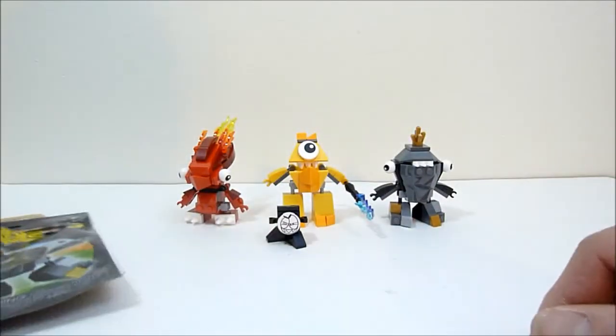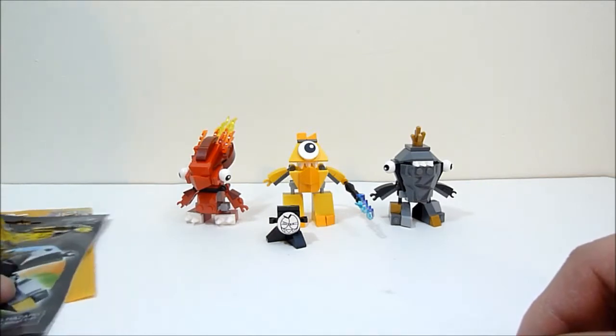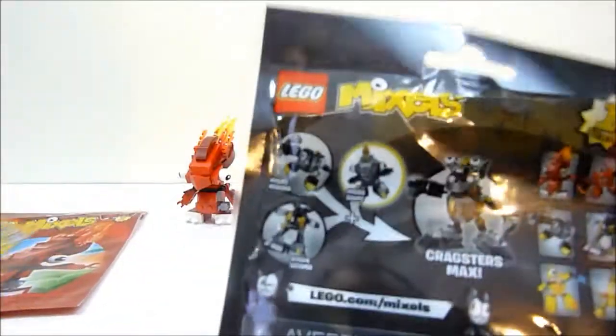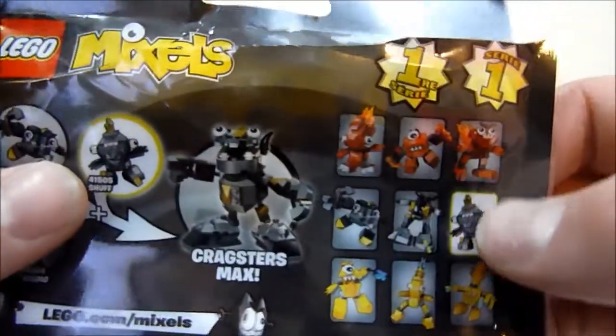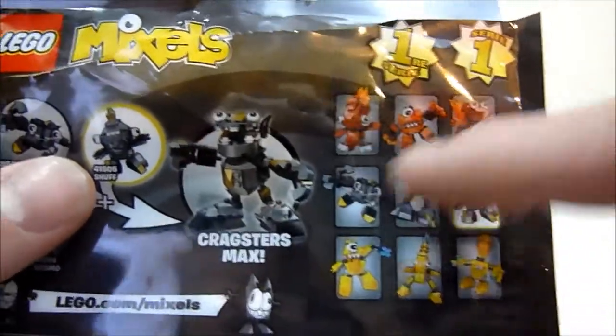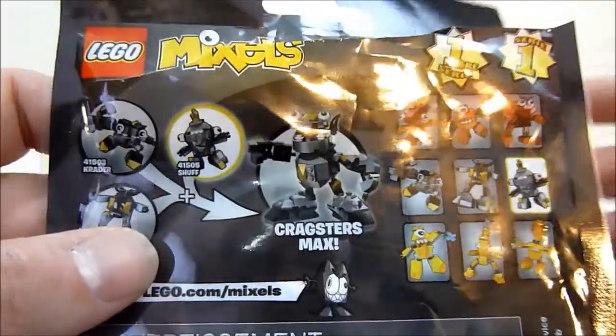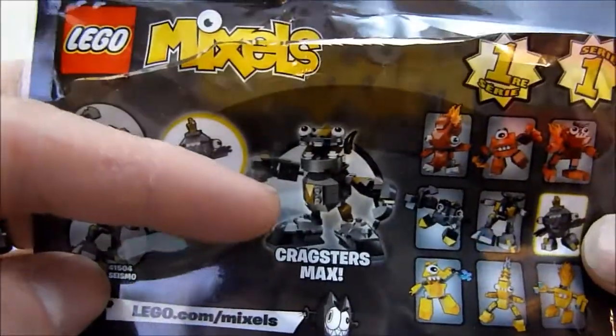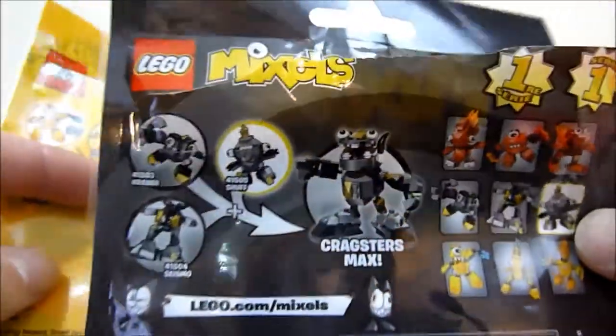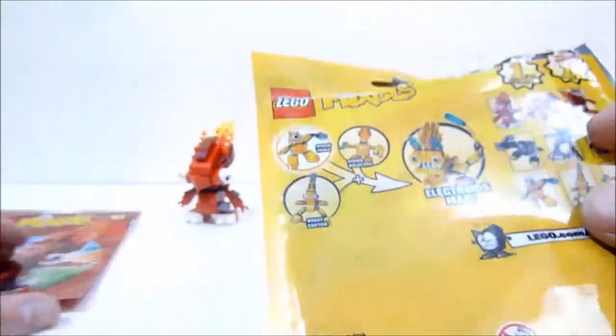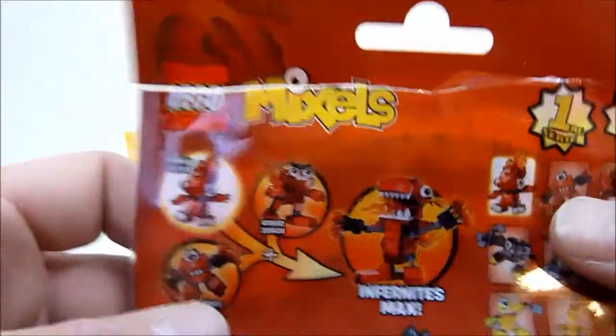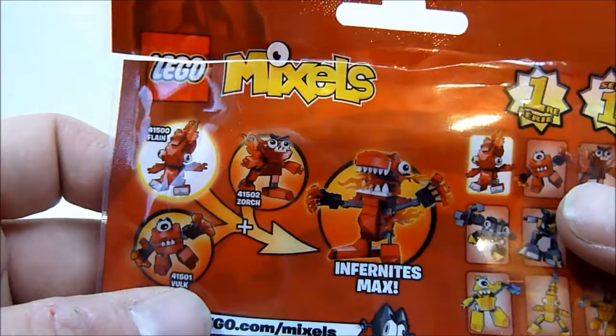You can see on the back here that they come in a set of nine, and if you get the three of different colors, you can create a larger character like Cragsters Max, Electroids Max for the yellow dudes, and Infernites Max for the fire guys.